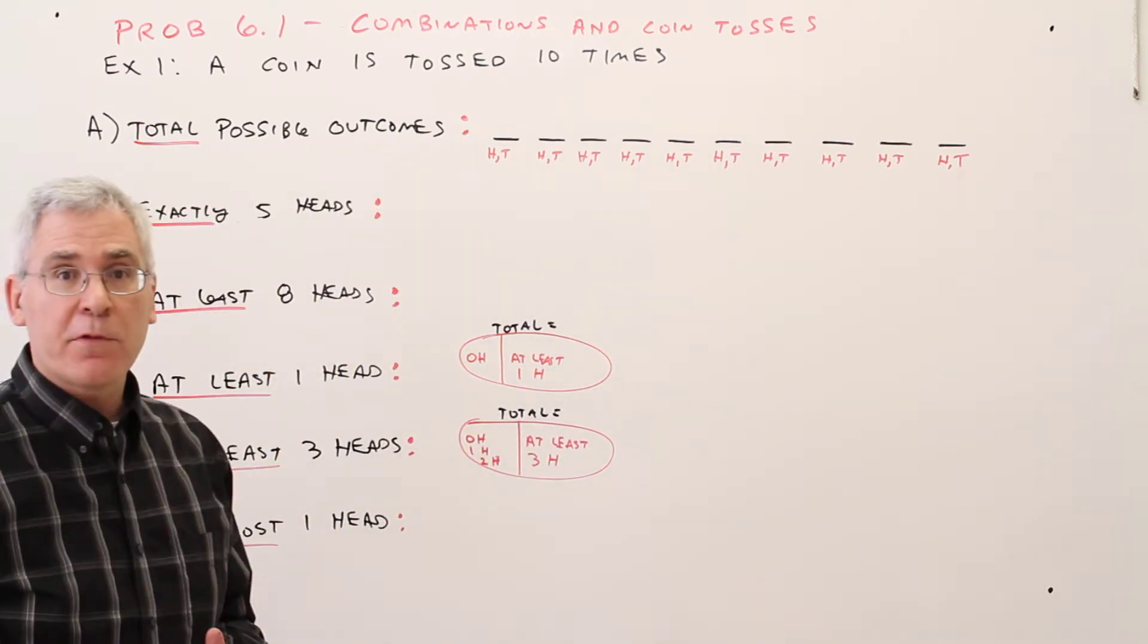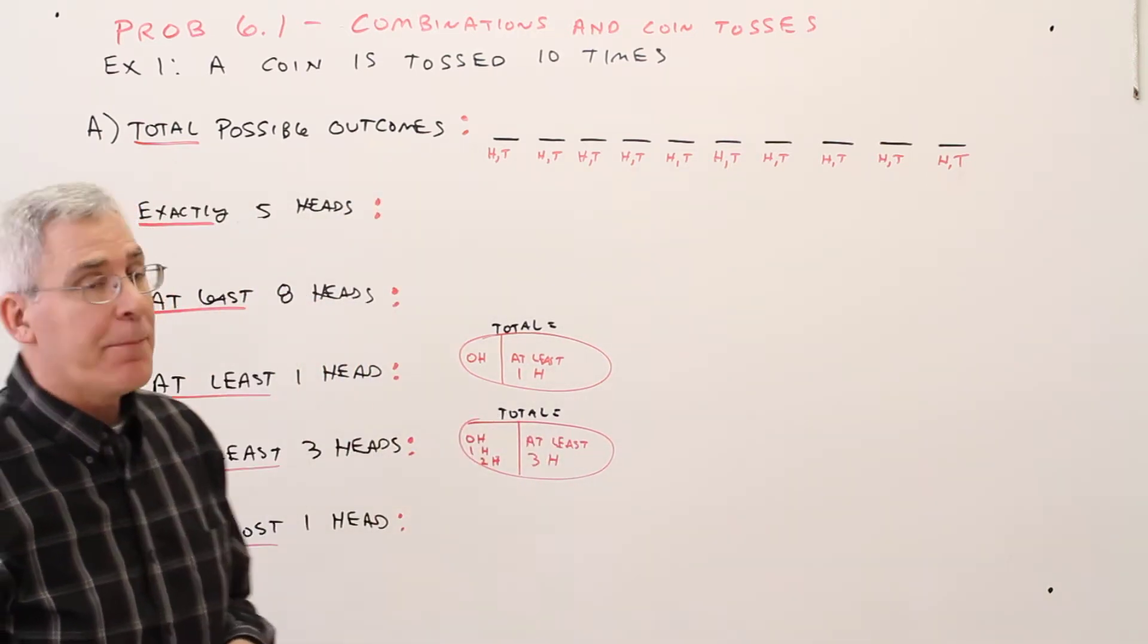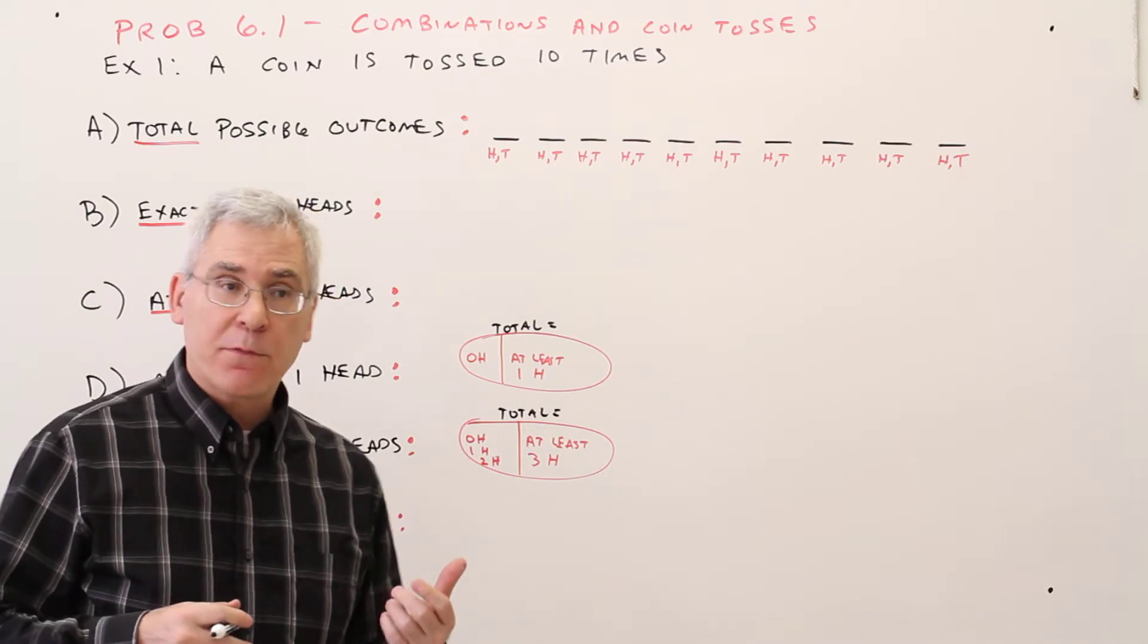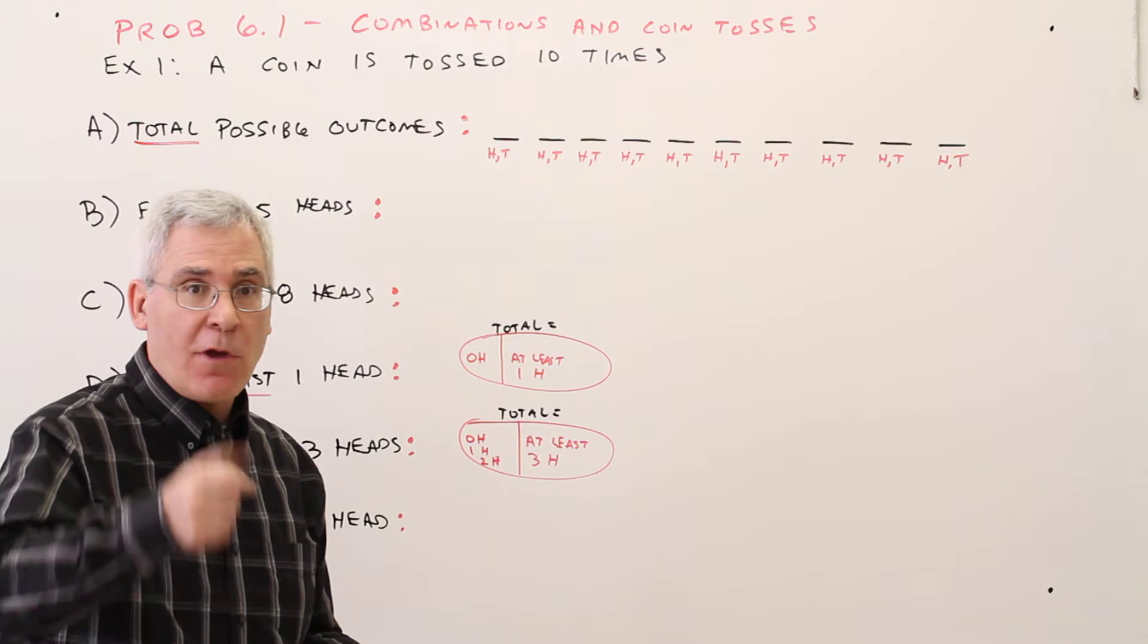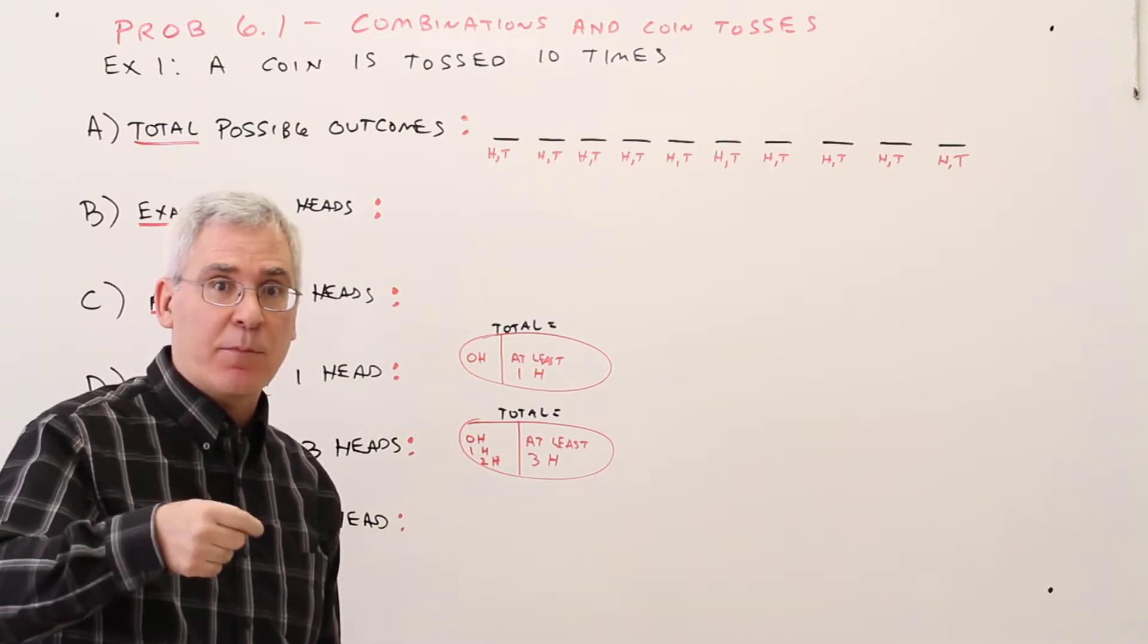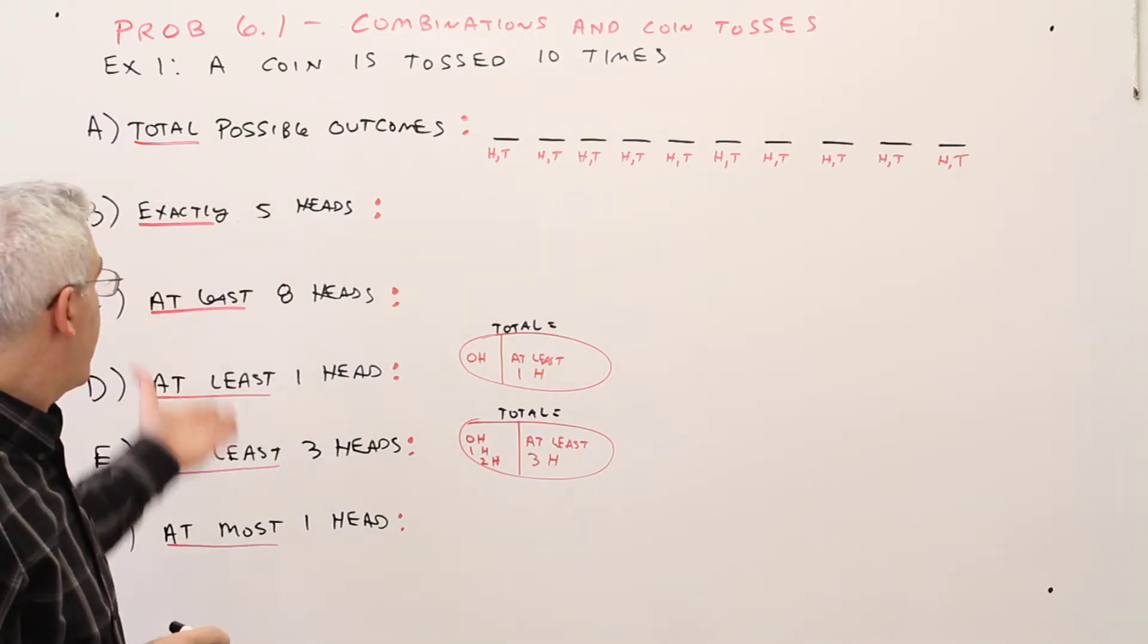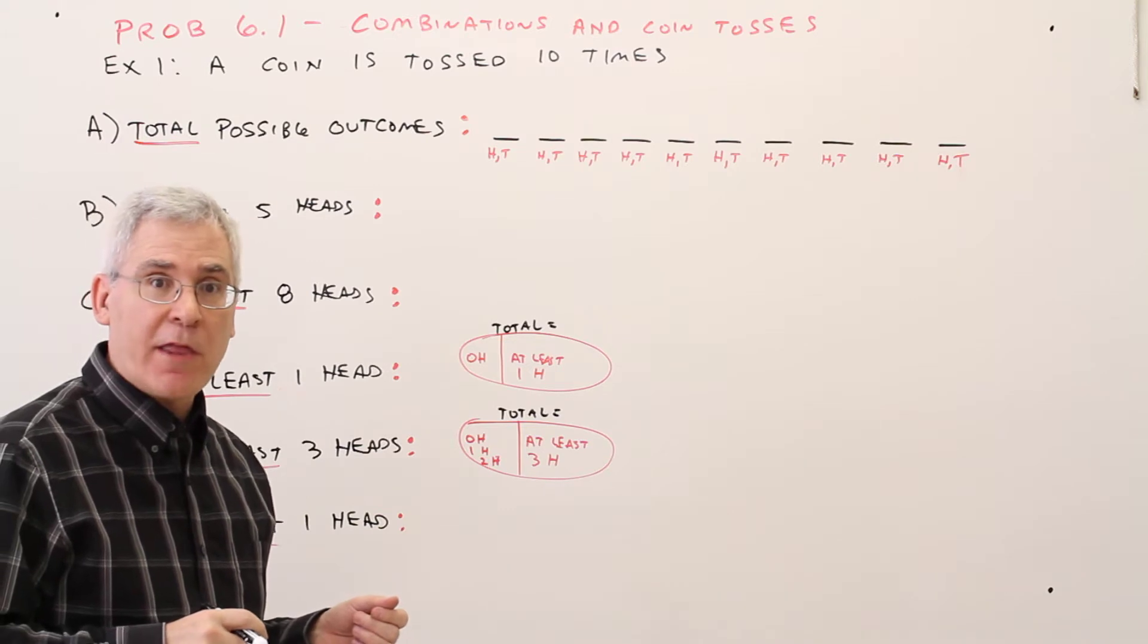Welcome to probability video 6.1, combinations and coin tosses for this example. So here's example 1. You toss a coin 10 times, and then we want to answer all these questions related to that.